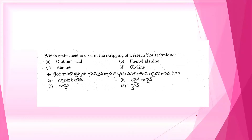Which amino acid is used in the stripping of western blot technique? A. Glutamic acid. B. Phenylalanine. C. Alanine. D. Glycine.